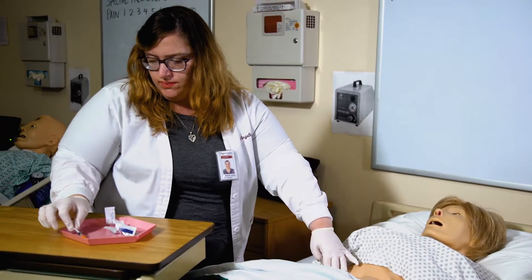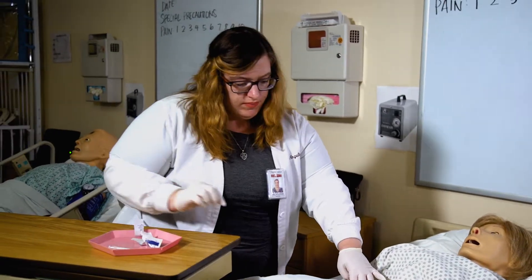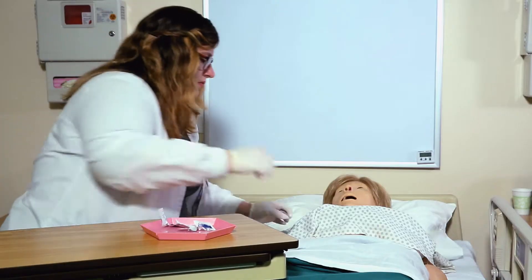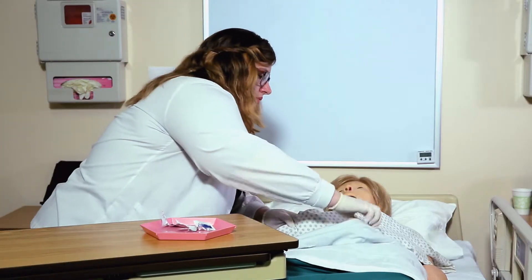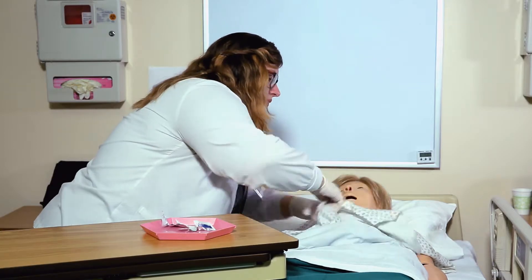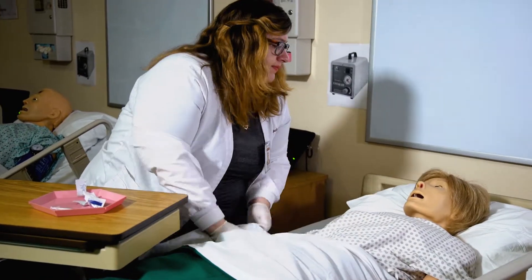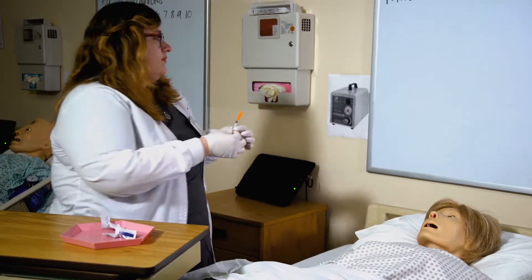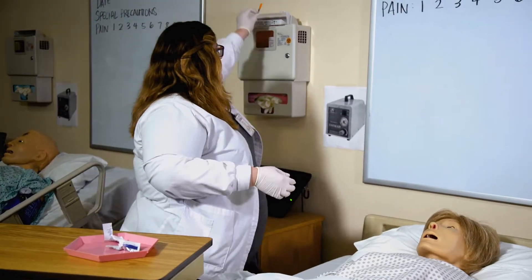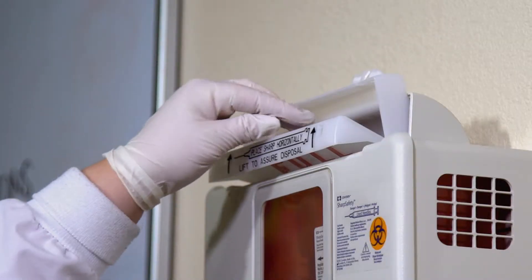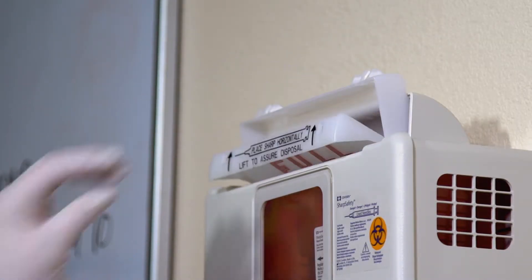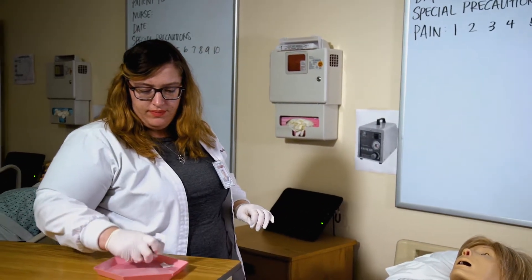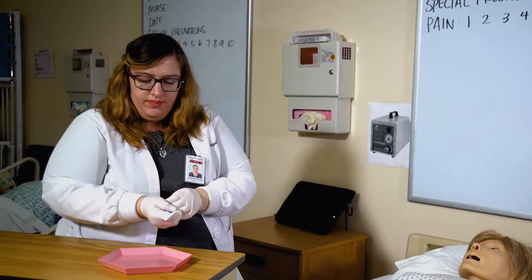Grasp the lower end of the syringe with the non-dominant hand and position the dominant hand at the end of the plunger. Do not move the syringe. Withdraw the needle while applying gentle pressure with the antiseptic swab. Note: do not push down on the needle with the swab while withdrawing it, because this will cause more pain. Discard the uncapped needle and syringe in the sharps container. Do not recap used needles. Remove gloves and wash hands.